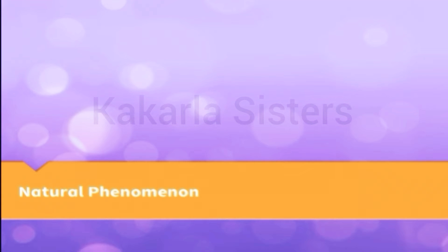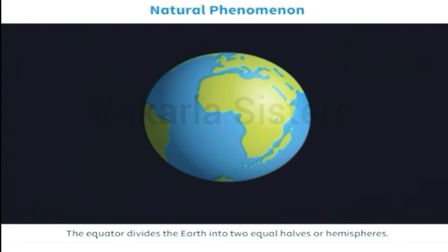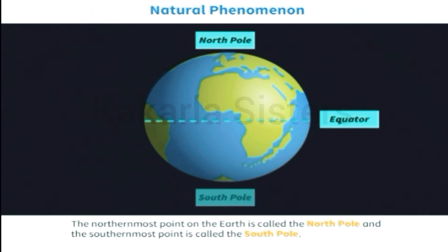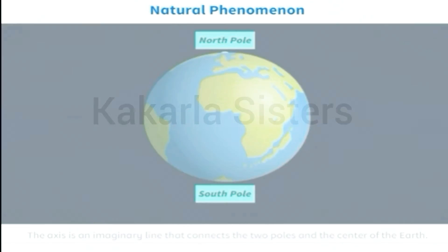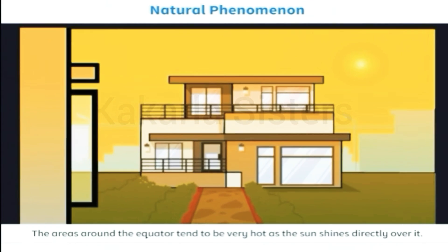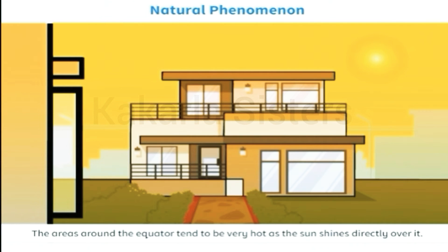The equator divides the earth into two equal halves or hemispheres. The northernmost point on the earth is called the north pole and the southernmost point is called the south pole. The axis is an imaginary line that connects the two poles and the center of the earth. The areas around the equator tend to be very hot as the sun shines directly over it.